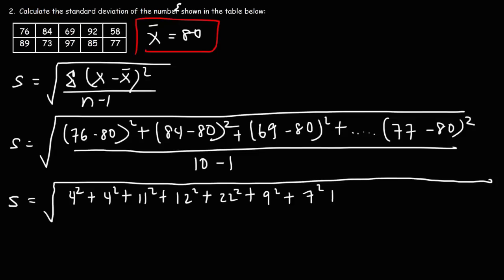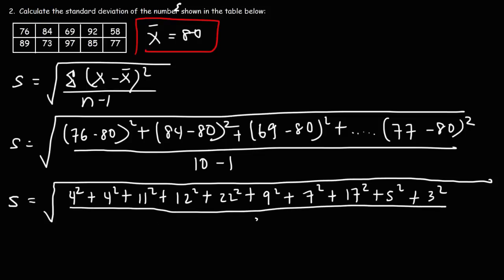73 minus 80 is a difference of 7. 97 minus 80 is 17. 85 minus 80 is 5. 77 minus 80 is negative 3, but we'll make it positive. 10 minus 1 is 9. So now it's going to be easier to calculate: 4 squared plus 4 squared plus 11 squared plus 12 squared, and so forth. Once you add all of the squared differences, you should get 1234. Divide that by 9, then take the square root of the result. The standard deviation for this problem is 11.709.